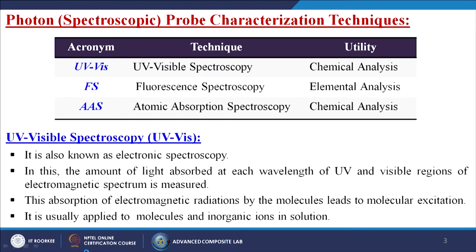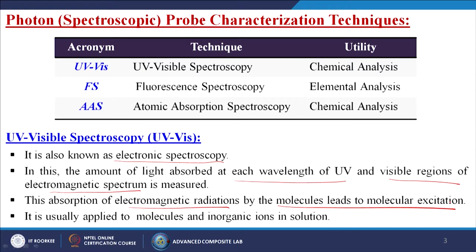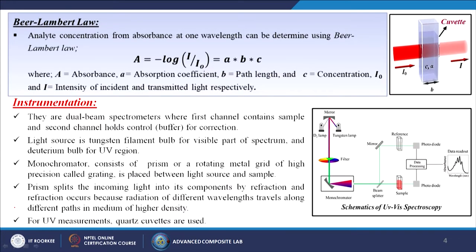So first let us know what is UV visible spectroscopy. It is also known as electronic spectroscopy. In this, the amount of light absorbed at each wavelength of UV and visible regions of the electromagnetic spectrum is measured. This absorption of electromagnetic radiations by the molecules leads to molecular excitations. It is usually applied to molecules and inorganic ions in solution. Now we are going to discuss about the Beer-Lambert law — analyte concentrations from absorbance at one wavelength can be determined using the Beer-Lambert law.